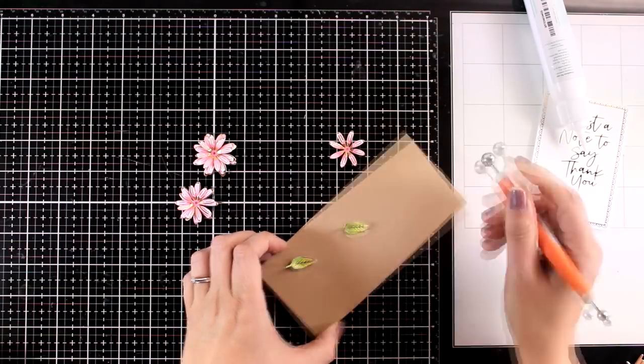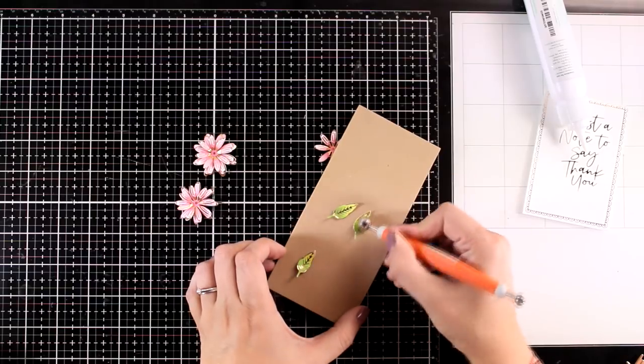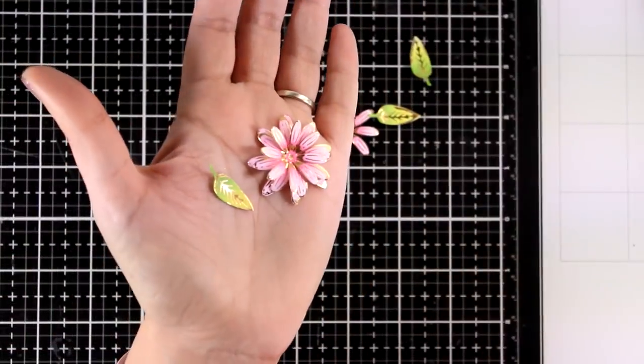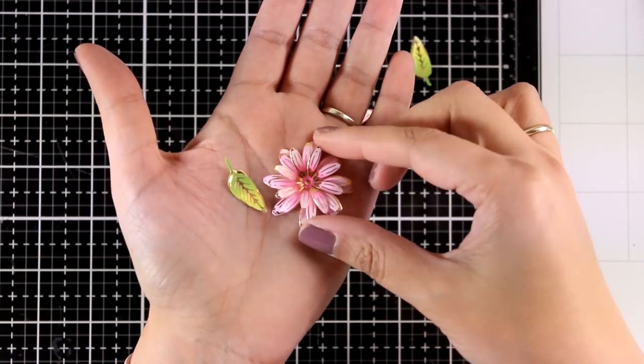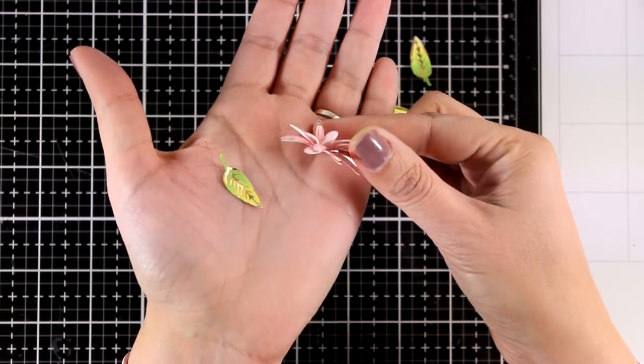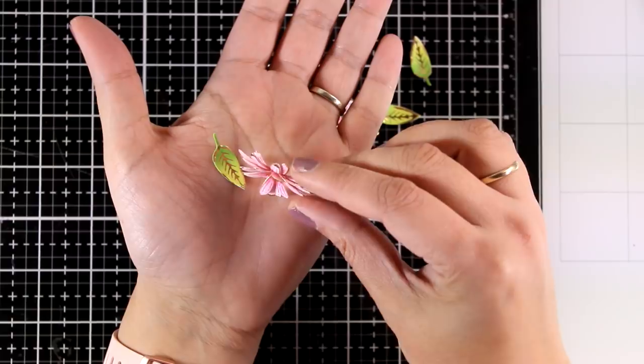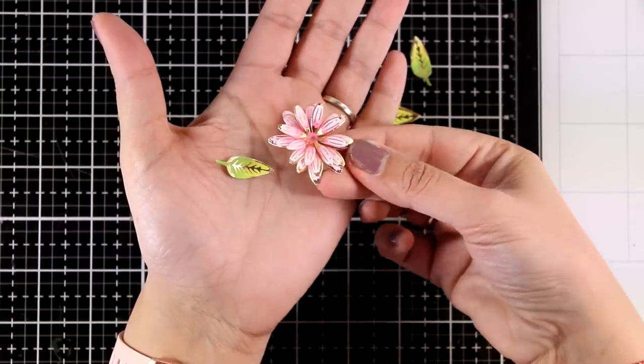I am adding a bit of a curve, a bit of dimension on the leaves as well this time at the front and here is a close-up look on how gorgeous these flowers and the leaf look with that foiling and you will see some close-up photos at the end of the video as well.